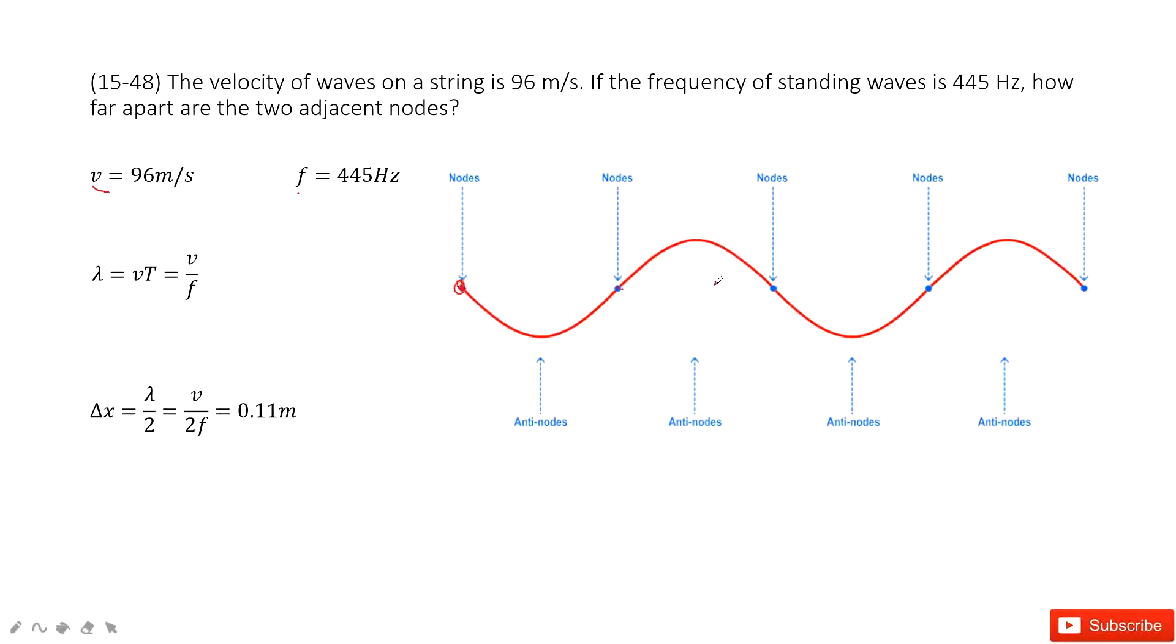So from there to there is one wavelength. And then the distance between these two nodes is half of the wavelength. So it asks you to find half of the wavelength in this question.